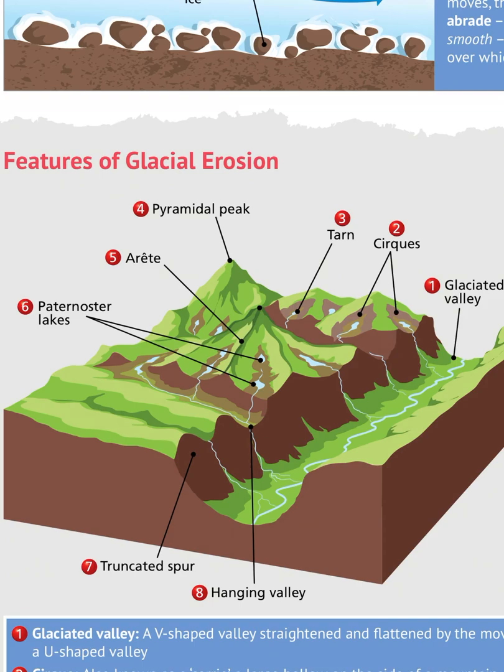The second feature is labelled as cirques in the diagram, but they're more commonly called corries. These are bowl-shaped depressions high up in the mountains where glaciers began. Corries were little hollows in the mountainside where snow accumulated into very heavy, dense, compacted ice. You can recognise corries as they have three steep sides and one shallow side.